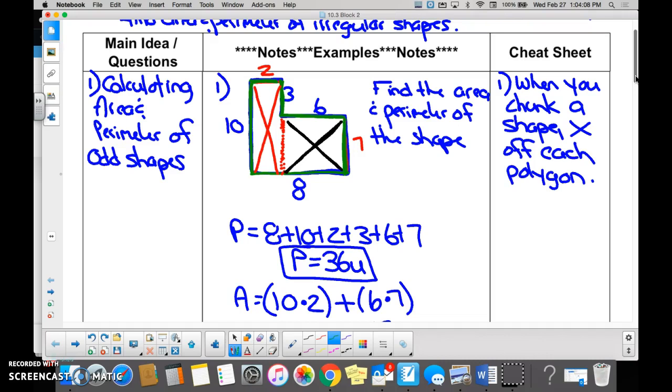So if you look at the green outline, that is the shape I gave you. And then I told you that this side was 10, this side was 8, this side was 6, and this side was 3. The red 2 and the red 7, I did not tell you those.